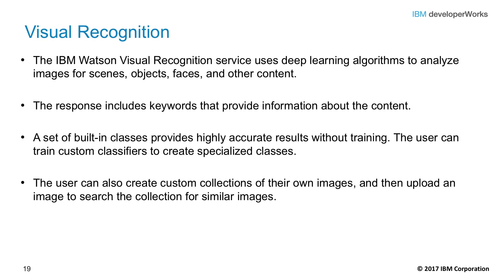The IBM Watson Visual Recognition Service uses deep learning algorithms to identify scenes, objects, and faces in images that you upload to the service. The service is pre-trained on a default classifier with a very broad range of features that can be present in images. Developers can create and train a custom classifier to identify subjects for specific scenarios as needed. Additionally, application developers can create custom collections of images and then search that collection with an input image to find similar images from the collection.